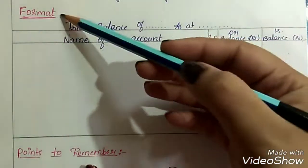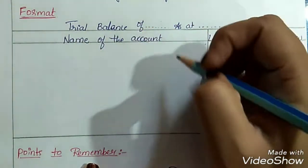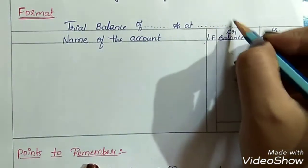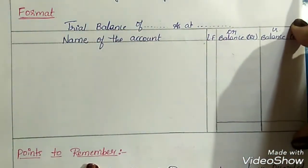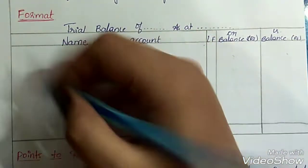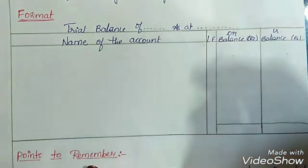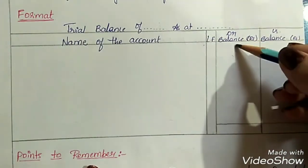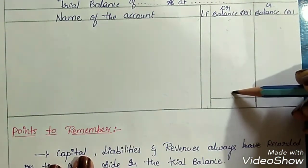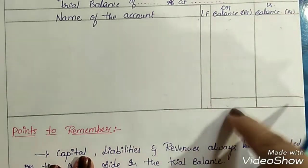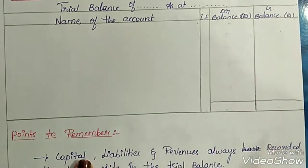Let's have a look at the format of trial balance. First of all, it has a heading: 'Trial balance of' — here you mention the name of the company, and the date. The format of trial balance is somewhat similar to journal entries, except there is no date column. You mention the name of the accounts in the particulars column, then the ledger folio column, and then debit balances and credit balances columns. When you total up all the balances on the debit side and on the credit side, they must tally. This is the rule of trial balance — if they tally, your trial balance is correct.